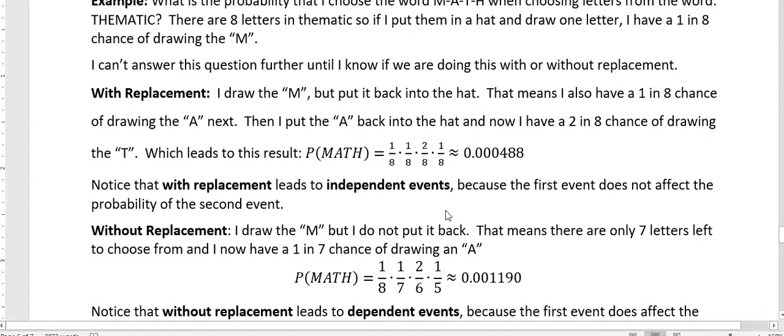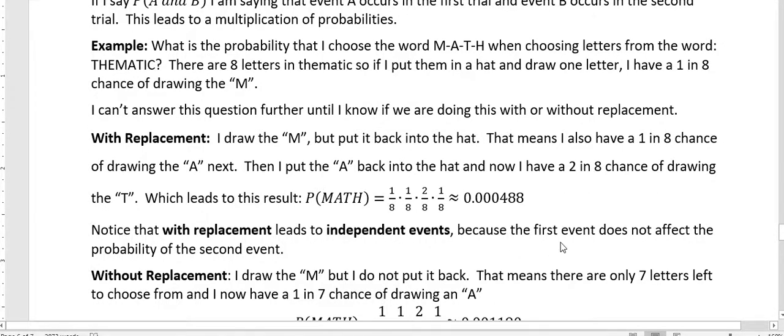Notice that with replacement, this leads to independent events. Because the first event does not affect the probability of the second event. If I started off with my first letter as A, I'd have a one in eight chance. If I replace, I continue to have a one in eight chance. So that leads to an independent event when I replace.